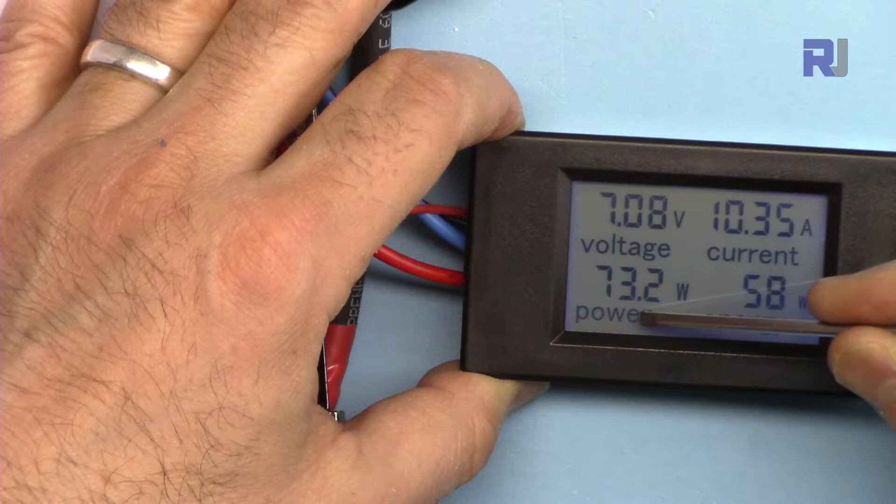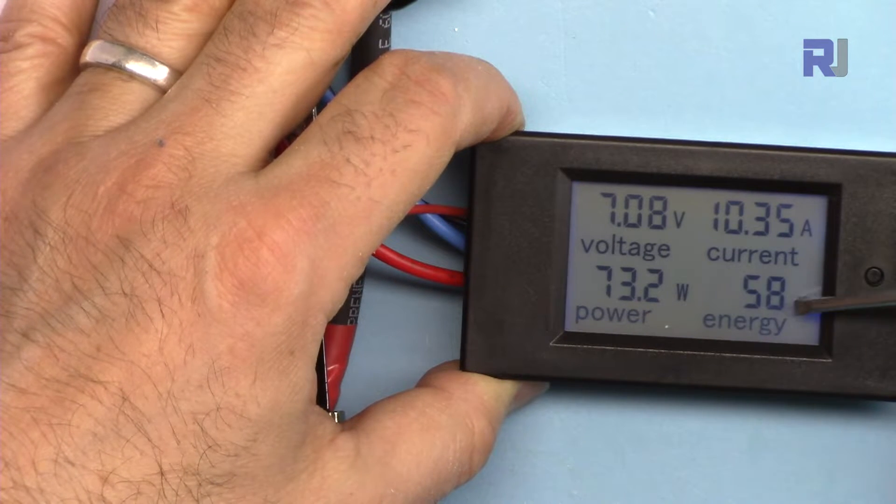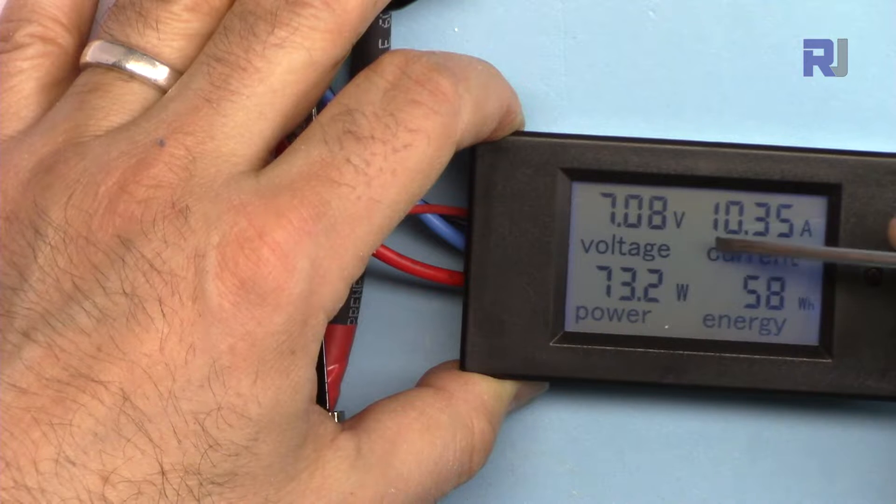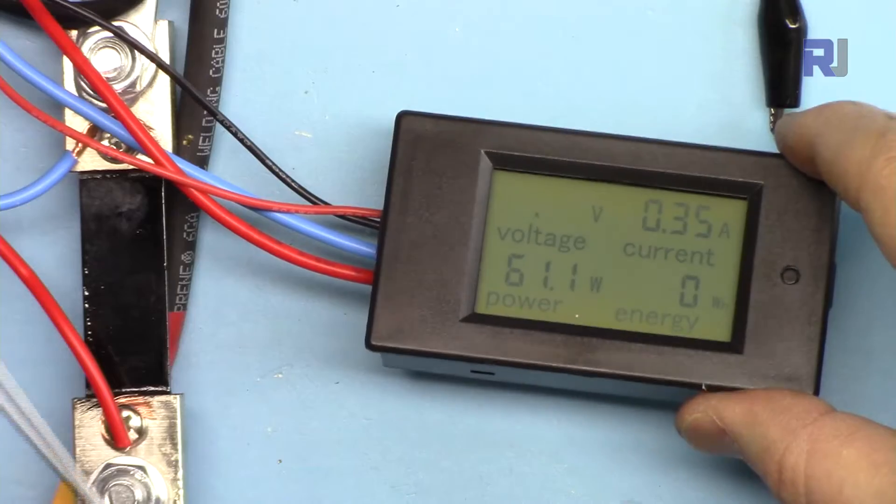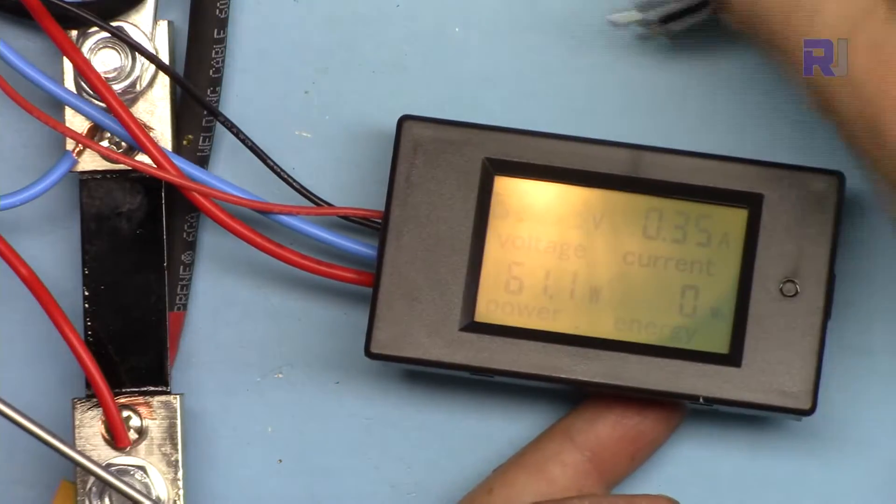It has a backlight here. For example now it shows the voltage of 7 volts, the current is 10 ampere, and this is the power and this is the energy in watt hours that has been consumed so far when the device was on.